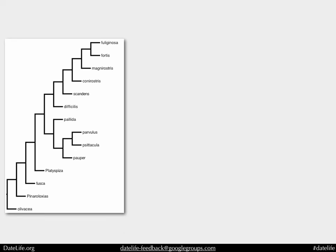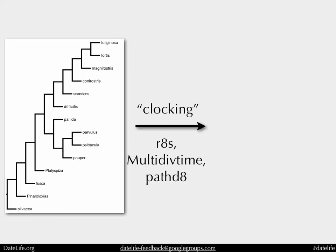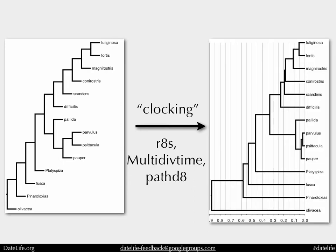You start with a tree that has branch lengths proportional to the amount of character change, or even no branch lengths, and then you clock it using one of these programs. You get back an ultrametric tree with branch lengths proportional to time, so you can say these things diverged 0.05 million years ago or something like that.